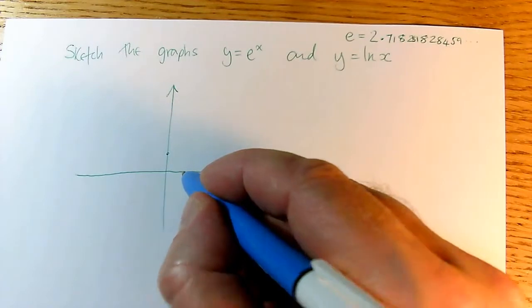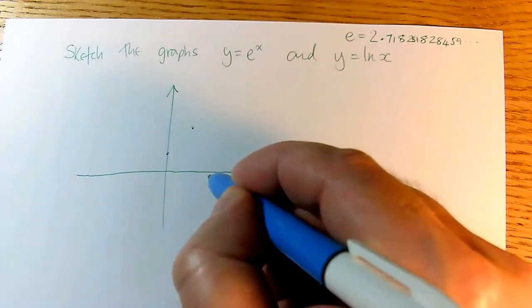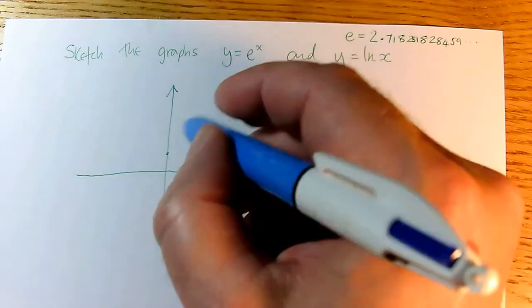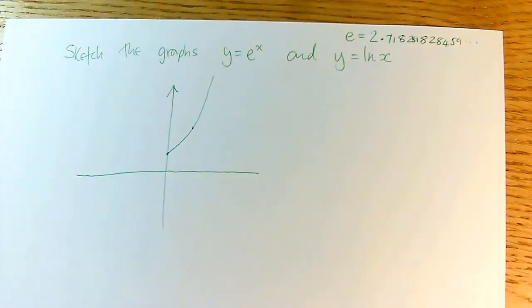And when x is 1, y is going to equal e to the power of 1, which is going to be e, which is up here. And then when y is 2, we're going to get e squared, which is even higher up. So as we go up through the powers, e to the x gets rapidly very, very big.